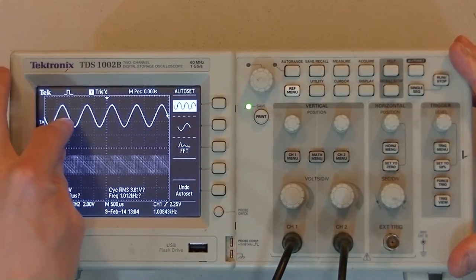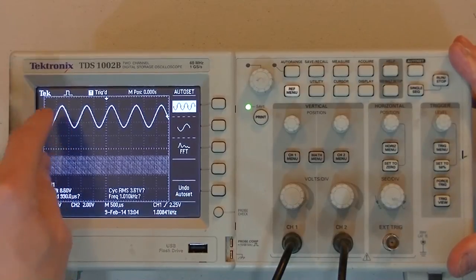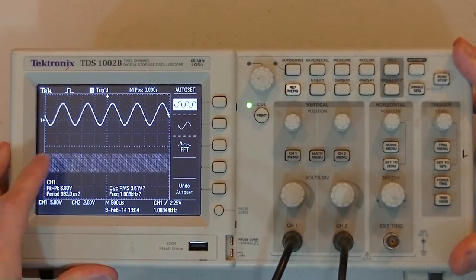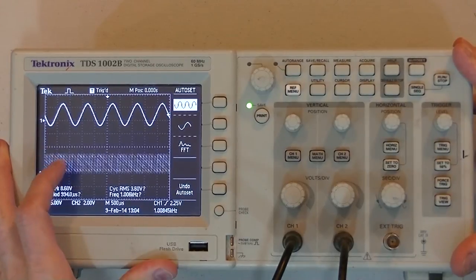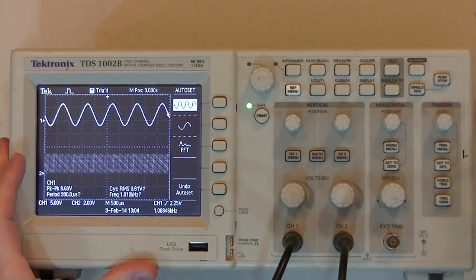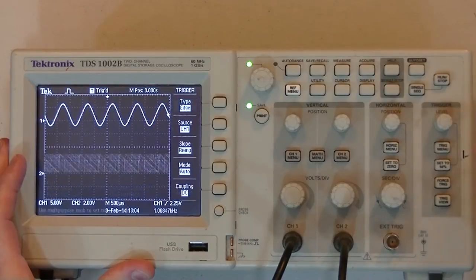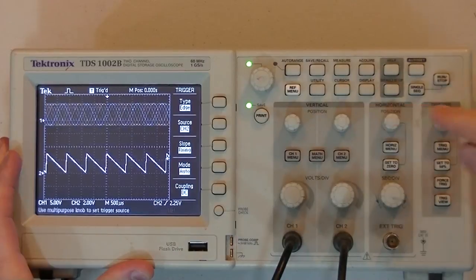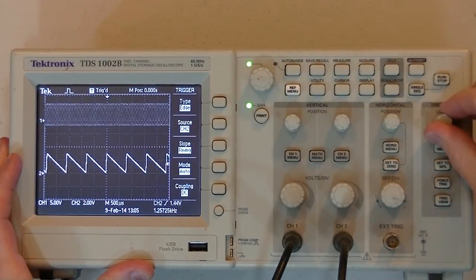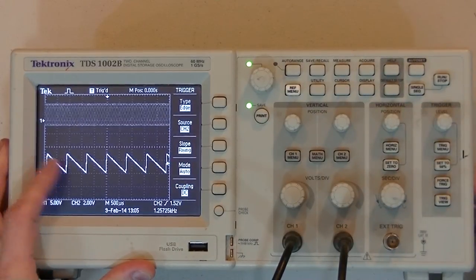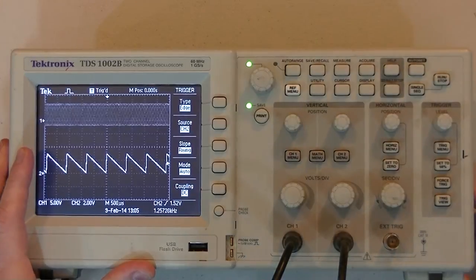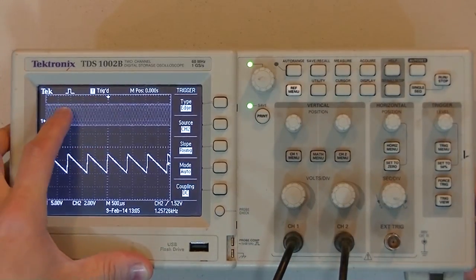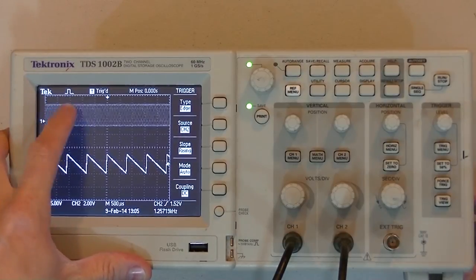So, in this case, I have a sine wave coming in on channel one. And on channel two, I have a sweep, or I mean a ramp. And actually, I'll show you something on this. If I switch it to my source being channel two, now this one's nice and rock solid because it's triggering on this one on the rising edge at this point. These two signals are not synced up with each other.